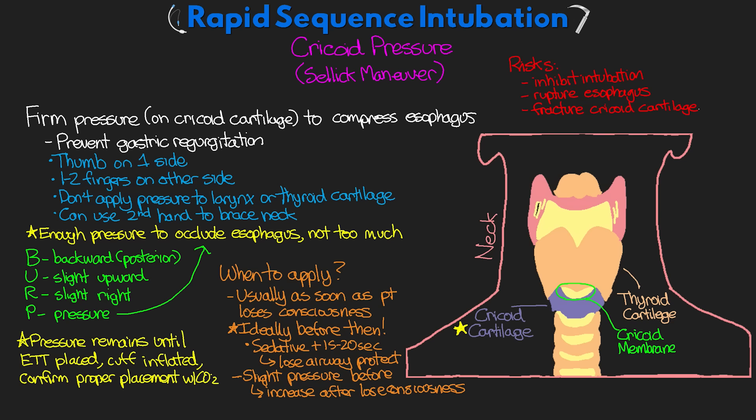So those are the big key differences when doing a rapid sequence intubation. Just a couple of things that we're modifying — and if you think about it, the reason we're doing this is to make this a quick intubation attempt and limit the risks of aspiration. The patient is at risk for possibly aspirating, which could cause further complications down the line: increased time on the ventilator, increased hospital stay, mortality. So we really want to try to do this in these higher-risk patients to reduce those risks.